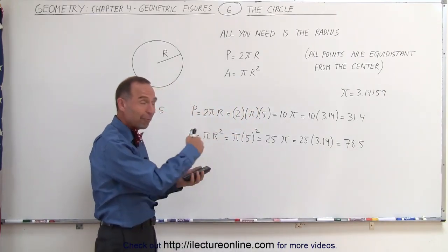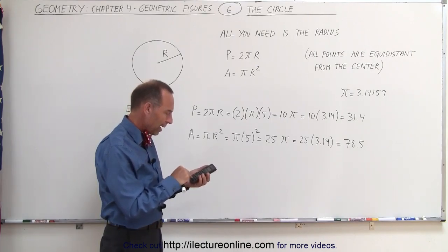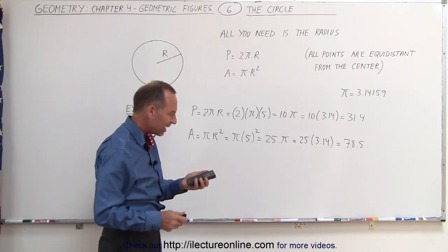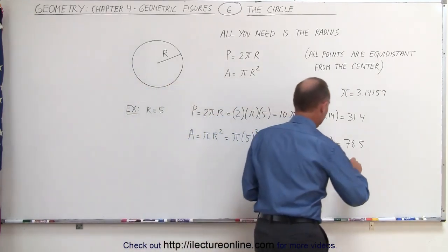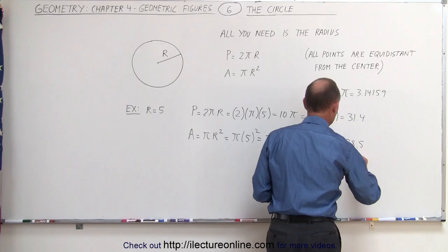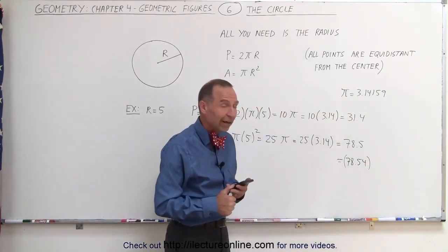because most calculators have π embedded right in them. So if I use that, I simply go π times 25, I get 78.54. So that's equal to 78.54 if I use the exact value for π. But again, if I